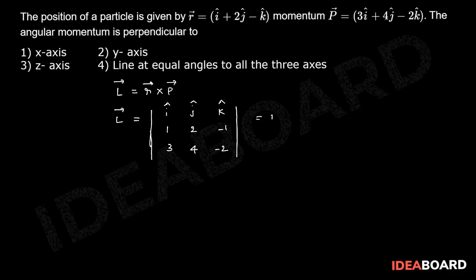Taking the expansion, i into minus 4 plus 4, minus j cap into minus 2 plus 3, plus k cap into 4 minus 6. Thereby the vector this becomes minus j cap minus 2k cap.